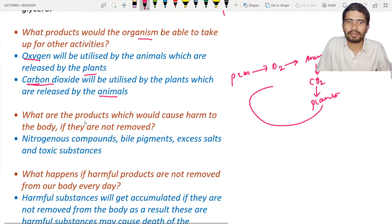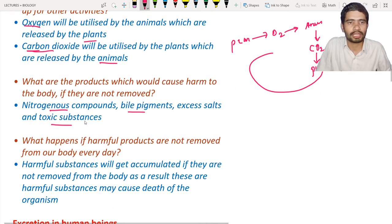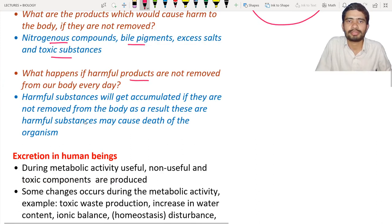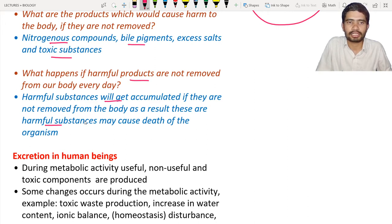The products that would cause harm if not removed include nitrogen compounds, bile pigments, excess salts, and toxic substances. If these harmful substances are not removed, they accumulate in the body and can cause damage or even death of the organism.